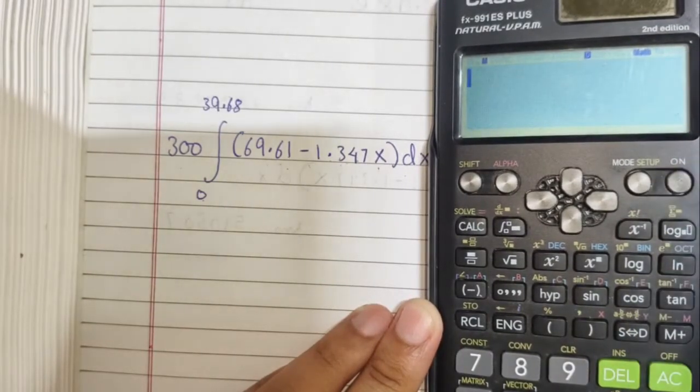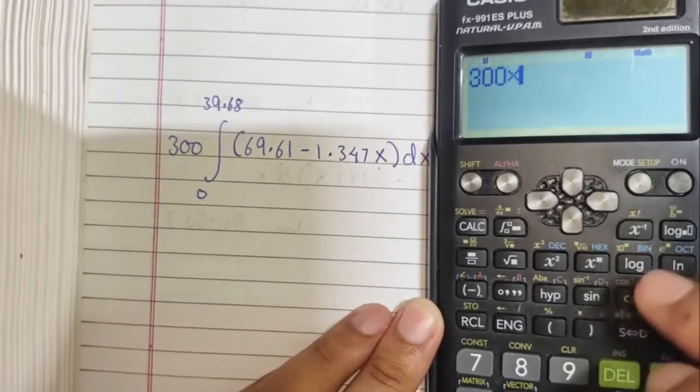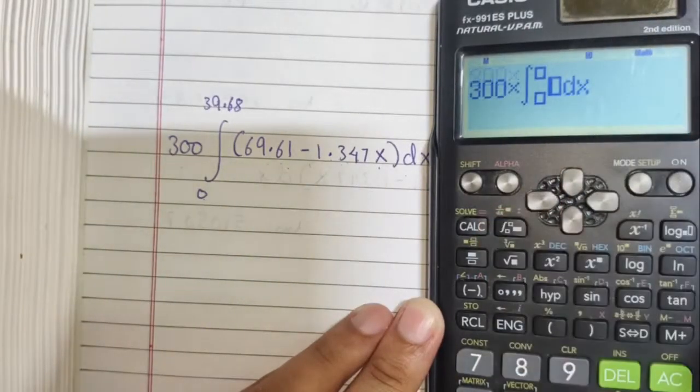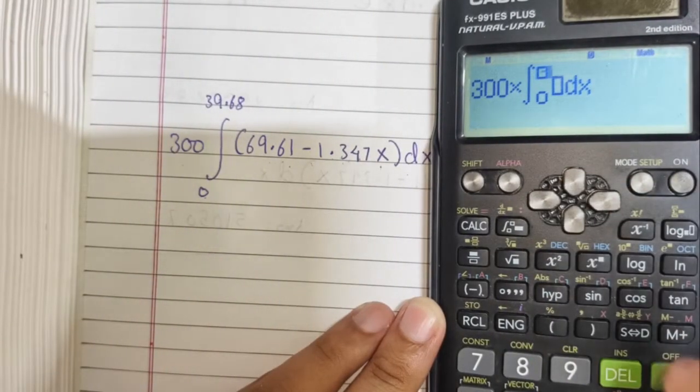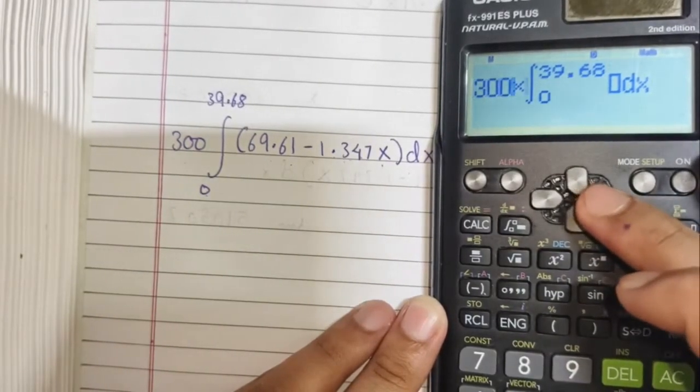Let's feed it into the calculator. First of all, let's feed the constant, 300, then we will select the definite integral function from here, add in the lower limit first, then the upper limit, then let's punch in the function.